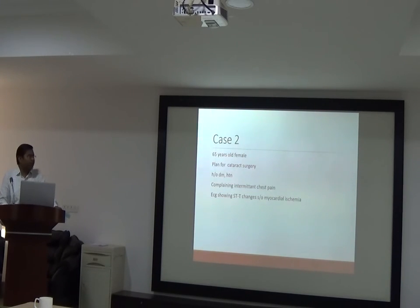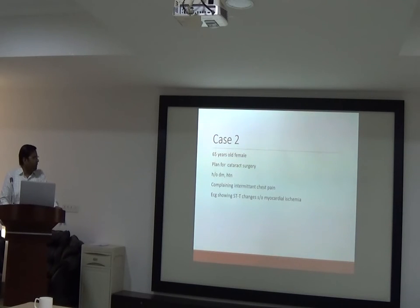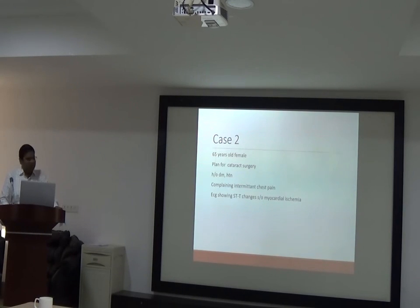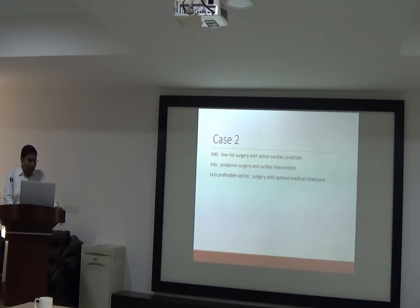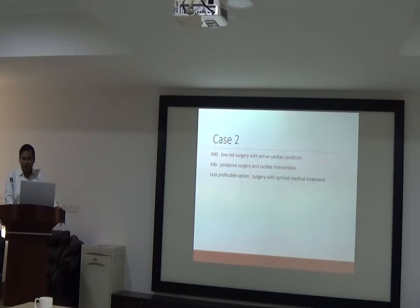Case 2: a 65-year-old female planned for cataract surgery — which is low-risk surgery — with history of diabetes and hypertension, complaining of intermittent chest pain. ECG shows ischemic changes suggestive of myocardial ischemia. In this patient, with low-risk surgery but active cardiac condition, postpone the surgery and do evaluation and intervention.